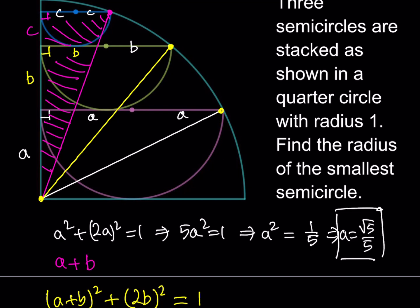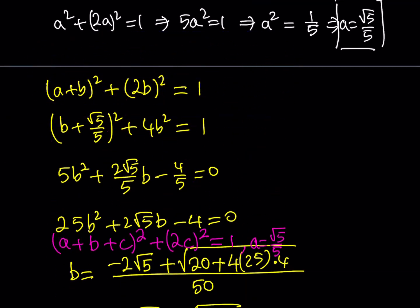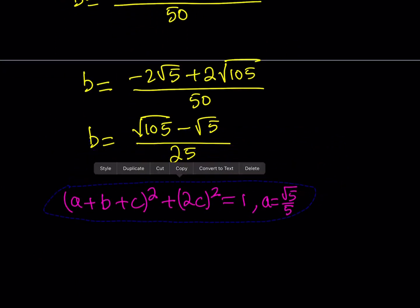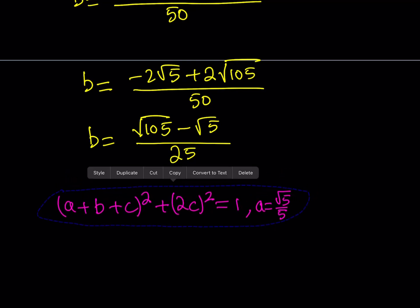And of course, the hypotenuse is always 1 because it's the radius of the quarter circle. Hopefully I'm making sense. So this is what I'm talking about. Let me write it down here and then I'll copy down below. A plus B plus C quantity squared plus 2C quantity squared is equal to 1. This is the equation I'm going to be using. But I know the value of A and B here. A is root 5 over 5, right? So we have the value of A. And down below, remember, we calculated the value of B. So what I can do is actually I can just take this guy and then carry it down here so I can use it.